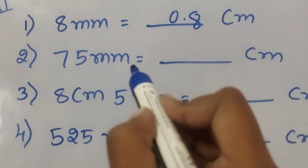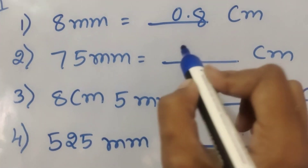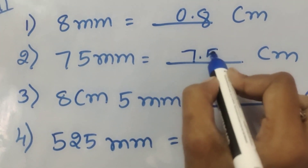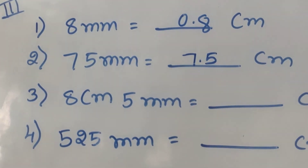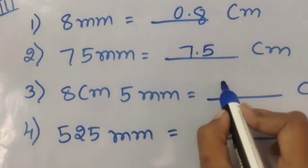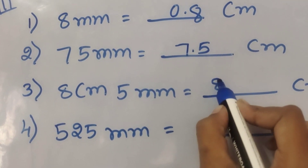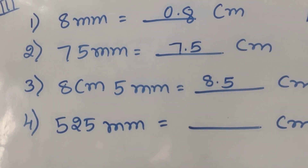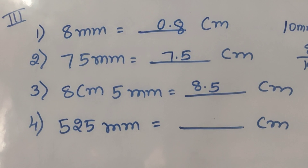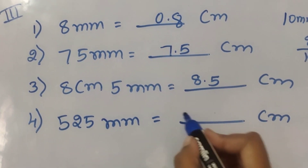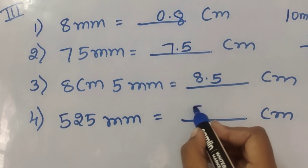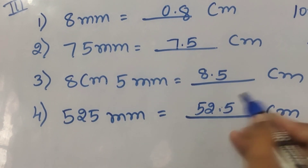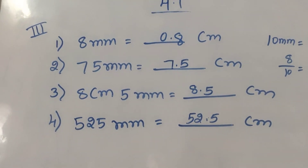75 mm: seventy-five mm becomes 7.5 centimeters. 85 mm equals 8.5 centimeters. 525 mm equals 52.5 centimeters.